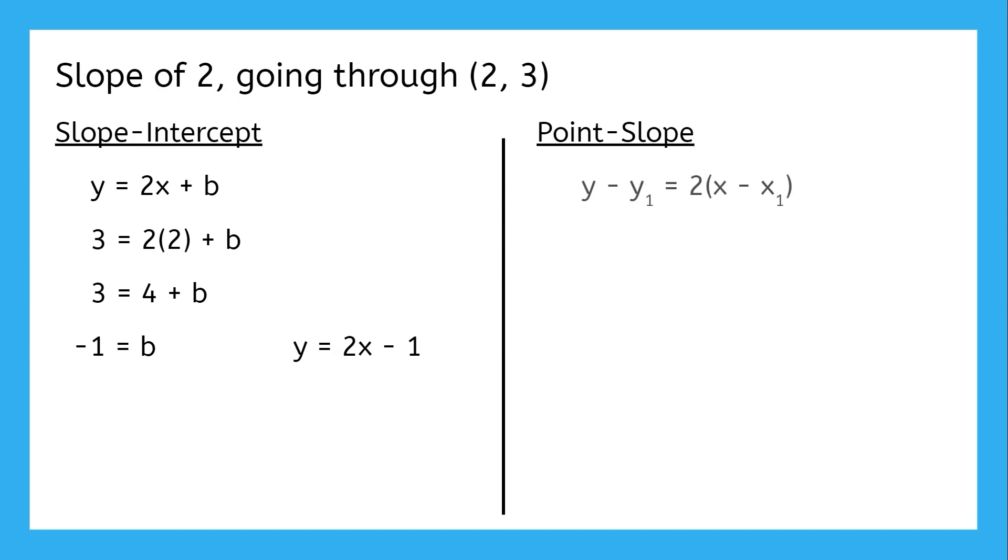To write the equation in point-slope form, we first plug in the slope, then we plug in the point, 2, 3 for x1 and y1, and that's it! The equation in point-slope form is y minus 3 equals 2 times x minus 2. We didn't have to do any solving or calculations like we did for slope-intercept form, because any point is good enough for point-slope form.